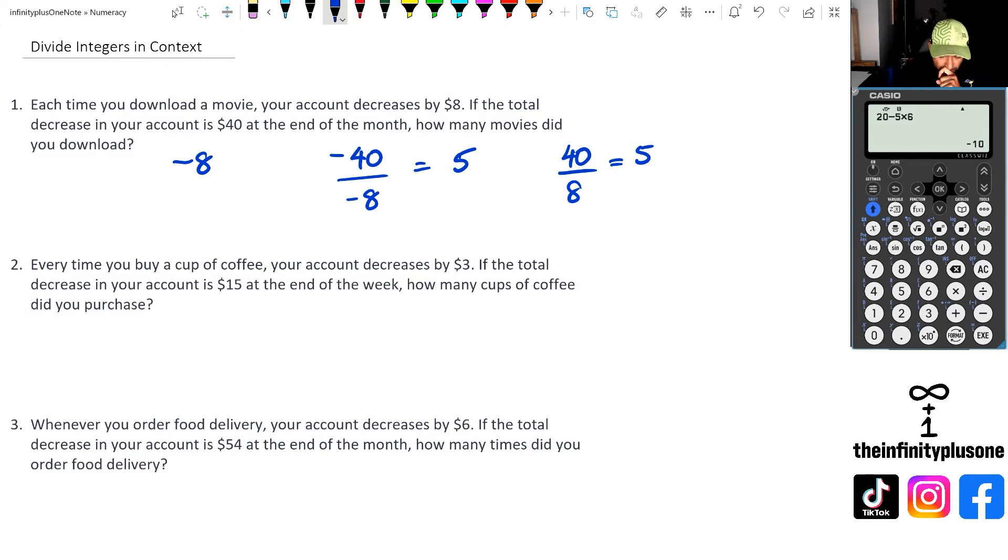Alright, let's look at question two. I'm going to do it like a normal integer. Account decreases by $3 every time you buy a coffee, total decreases $15. So you'd actually go 15 divided by three, which means you've actually had five cups of coffee.